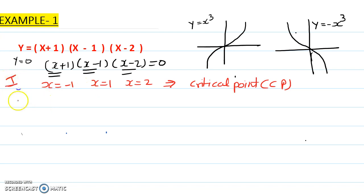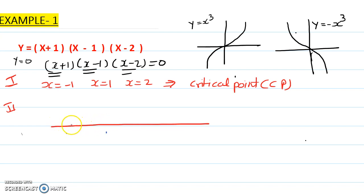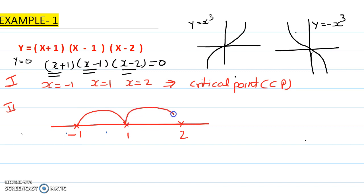The second step is to make a bridge shape diagram. You arrange the critical points on a number line in order: -1, 1, and 2, then draw the bridge shape diagram. Step 3 will be the sketching part.